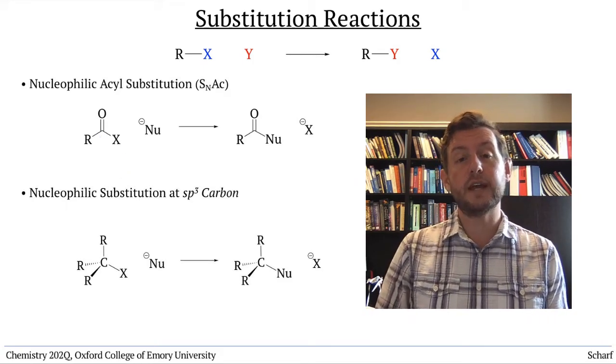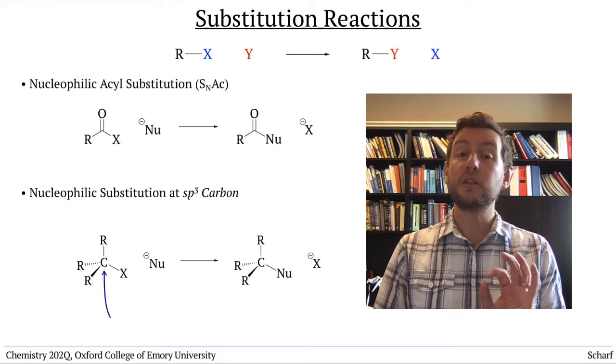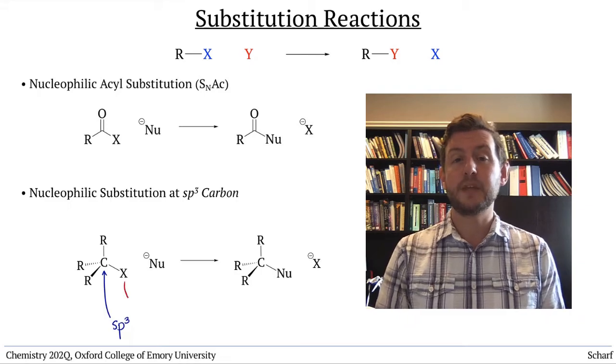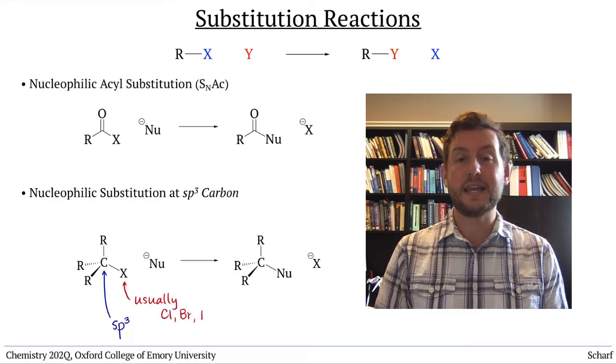A similar type of substitution reaction occurs at sp3 carbons with good leaving groups attached, usually alkyl chlorides, bromides, or iodides.